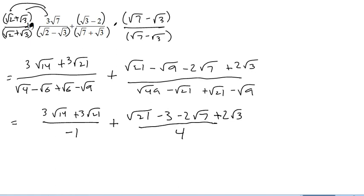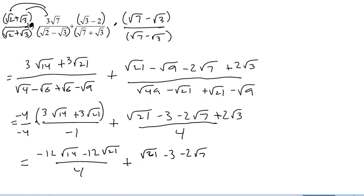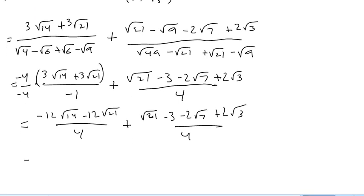Okay, now we just need a common denominator of 4. So I'm going to multiply top and bottom over here by negative 4. So that'll give me negative 12 root 14 minus 12 root 21, all over 4. And this guy will just stay the same. And now that we have a common denominator, we can add the tops. And there are like terms. We've got negative 12 root 21 and a positive 1 root 21. Those are our only like terms.